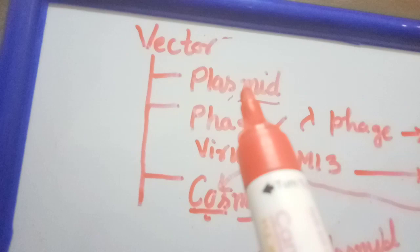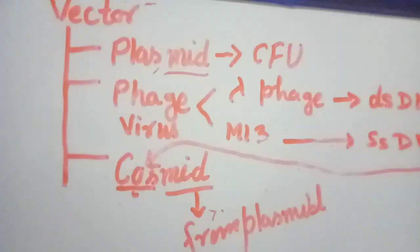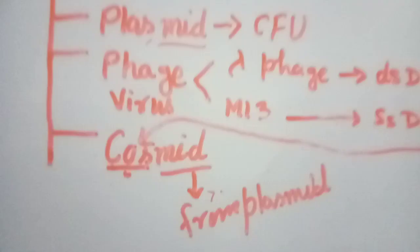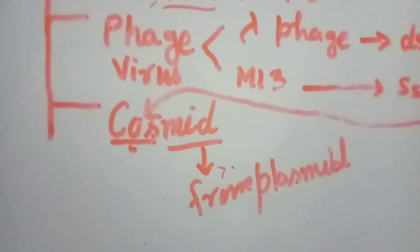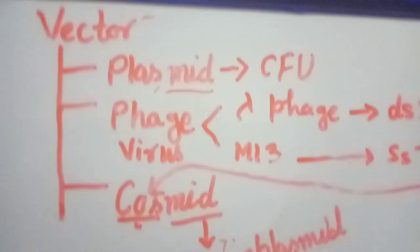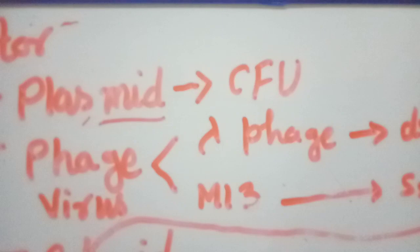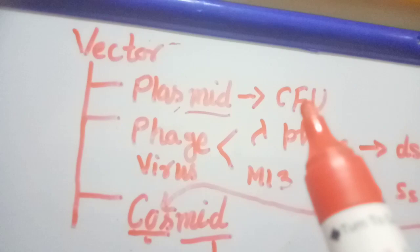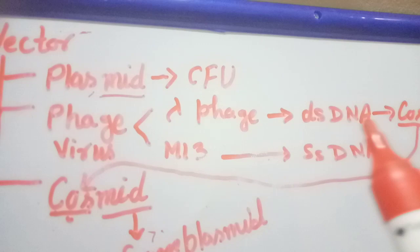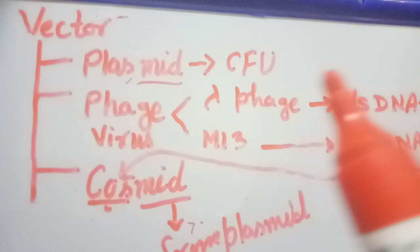In case of plasmid, it is forming the CFU, colony forming unit. In case of the plasmid, there is no lysis of the cells during recombinant DNA, but in case of the phage, lambda phage, there is lysis of the cells.